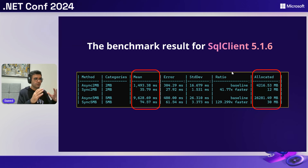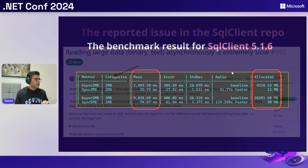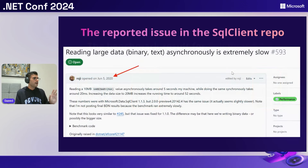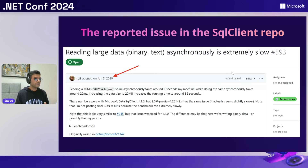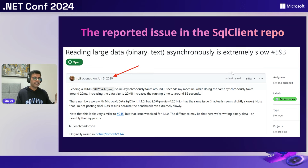So we're going to go deeper into the SqlClient. There is an open issue in the SqlClient repository, created around four years ago, pointing out that for large data, the asynchronous API is much slower than the sync one. This is a very interesting thread — I highly recommend reading all the comments. I learned a lot from the community responses on this issue.